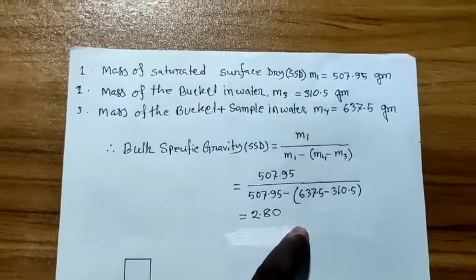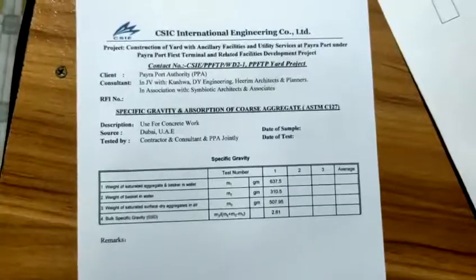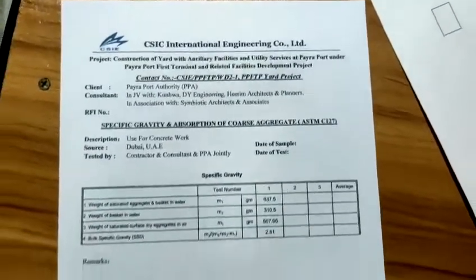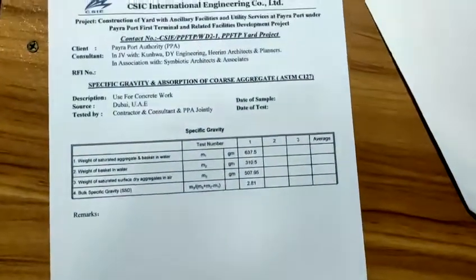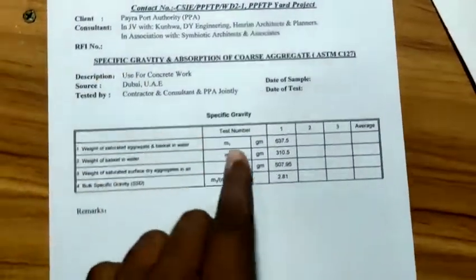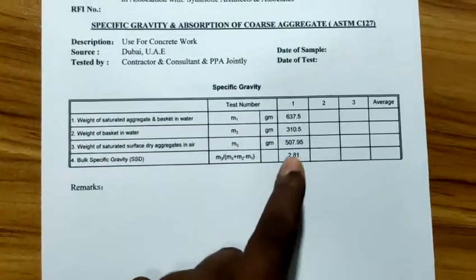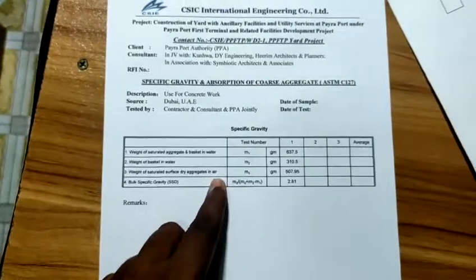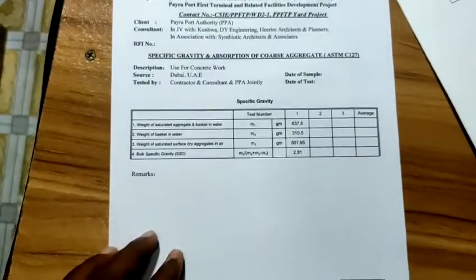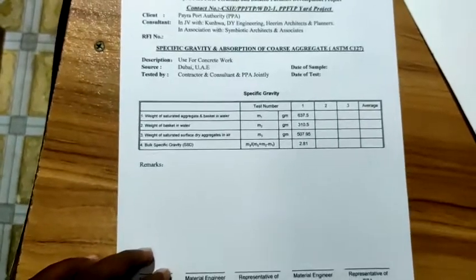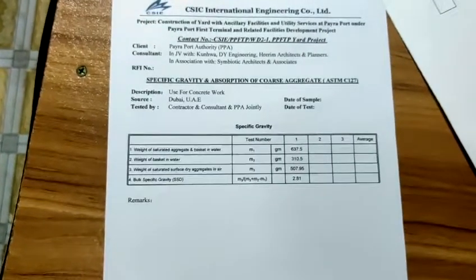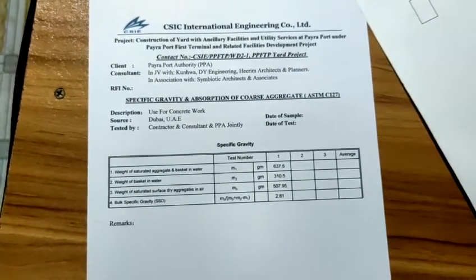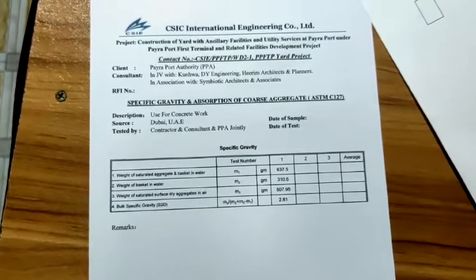After the calculation, we make a final sheet like this for approval. The measured specific gravity is 2.81, recorded in the format, and then we take a signature for client acceptance. Thank you for watching — please subscribe to our channel and hit the bell button.